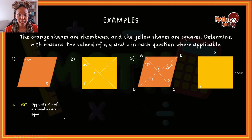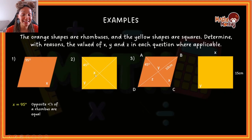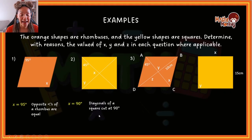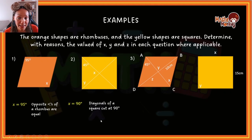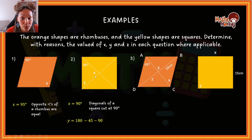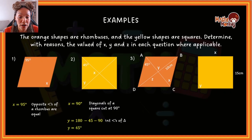Let's move to the second question. This is a square and I can see diagonals and angles. I already know that x is 90 degrees because diagonals of a square cut at 90 degrees. So x equals 90 — reason: diagonals of a square cut at 90 degrees. Then for y, I can see a triangle is formed. So y, x, and 45 must add up to 180. That gives us 180 minus 45 minus 90, because these are interior angles of a triangle, which means y equals 45 degrees.